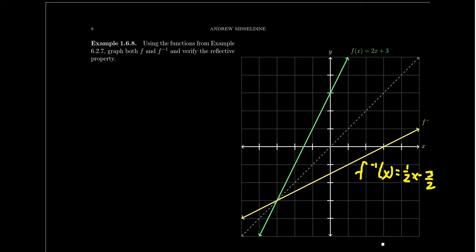Let's look at an example we saw earlier. The function f(x) = 2x + 3 has inverse function one-half x minus three-halves. We showed algebraically they're inverses. Notice the reflective property: these two lines are mirror images across y equals x. The y-intercept of 3 corresponds to the x-intercept of 3 for f inverse. The point (−1, 1) on f becomes (1, −1) on f inverse — x and y coordinates are swapped. These functions intersect on the line y equals x.